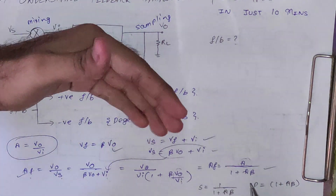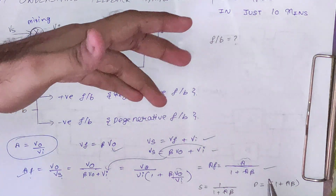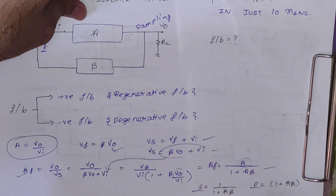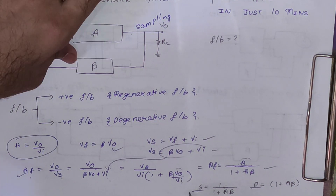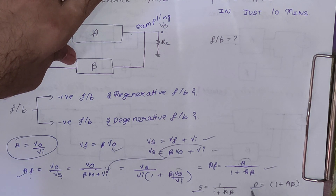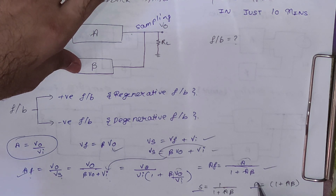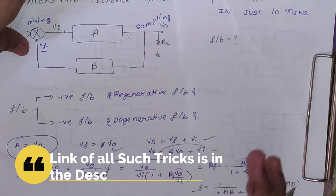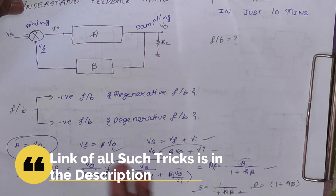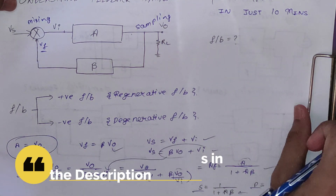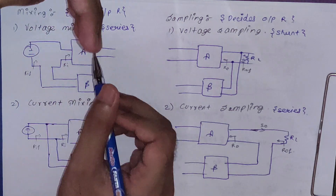There are two important factors to know: the sensitivity factor and the desensitivity factor. The formula for the sensitivity factor is 1/(1 + A·beta), and the desensitivity factor is simply (1 + A·beta). Now we will see the types of mixing as well as the types of sampling.